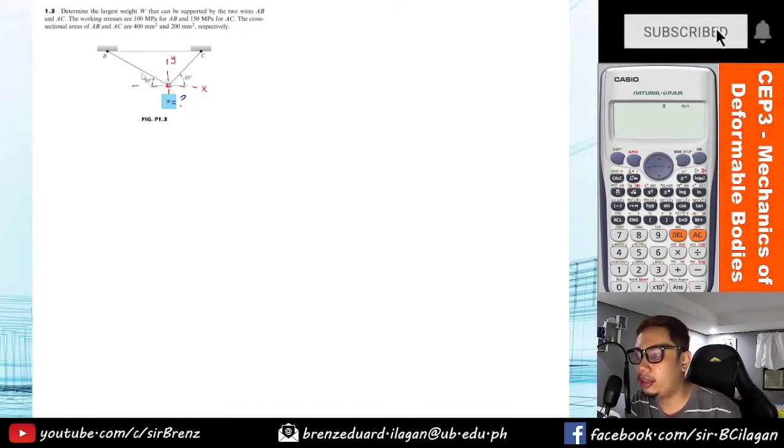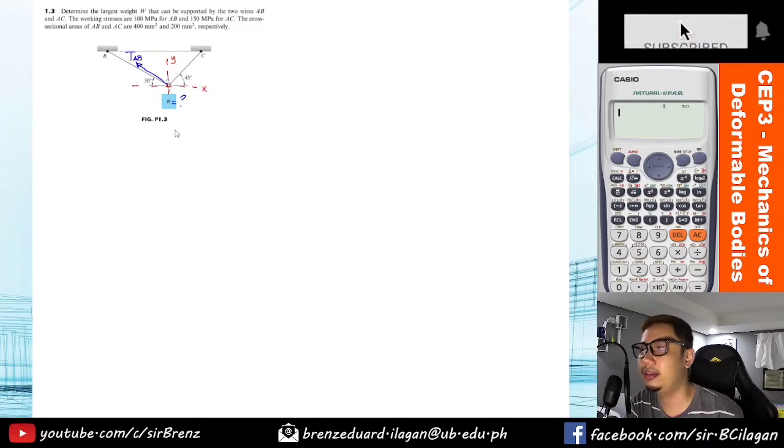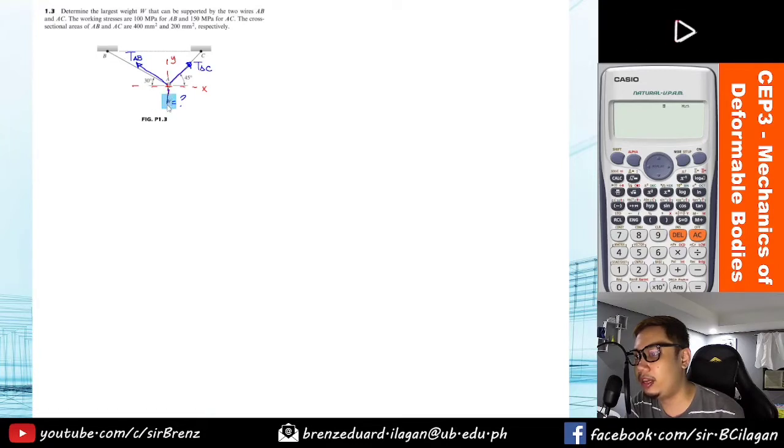When you section or cut it there, you have a tensile force here. This is the force acting at AB, let's name this as TAB. For AC, it's acting at 45 degrees, let's name this as TAC. And then last will be the weight W.